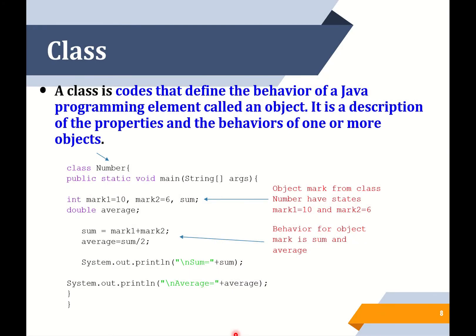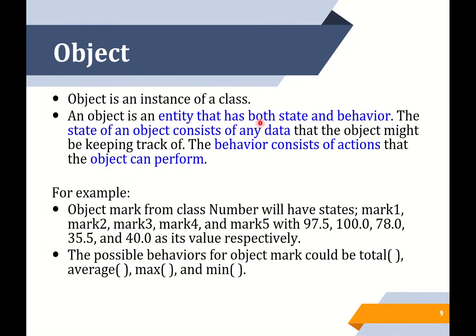What is a class? A class is a code that defines the behavior of a Java programming element called an object. It is a description of the properties and the behavior of one or more objects. The image below shows you coding that includes a class; for this example, the class name is 'number'. What is an object? Object is an instance of a class. An object is an entity that has both state and behavior. The state of an object consists of any data that the object might be keeping track of. The behavior consists of actions that the object can perform.